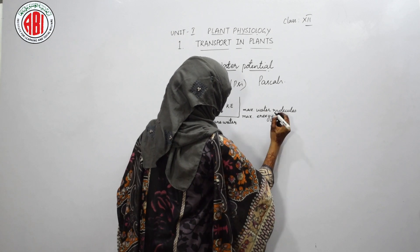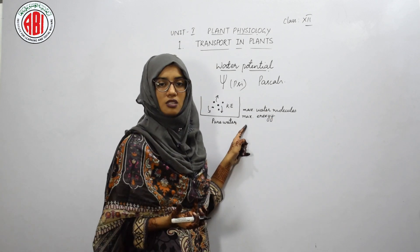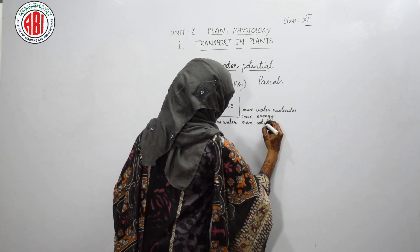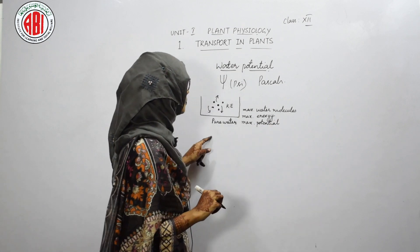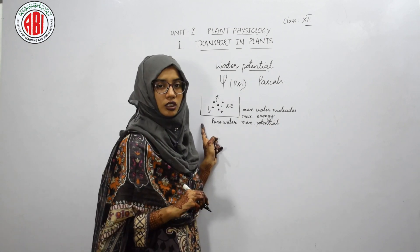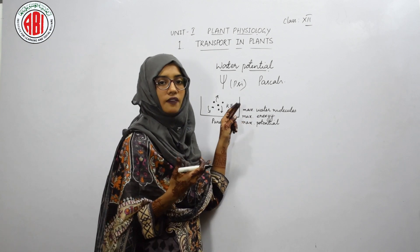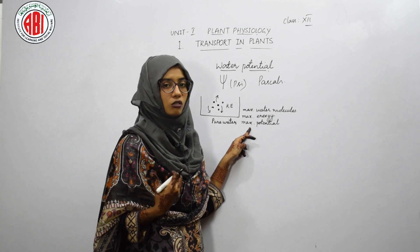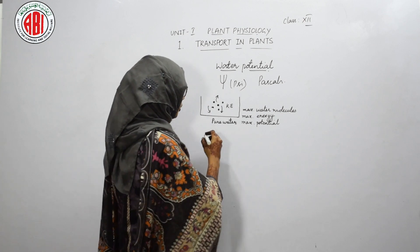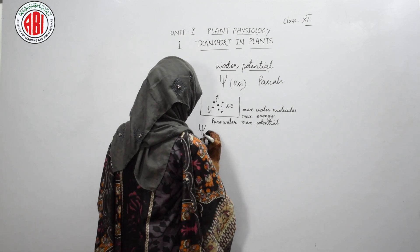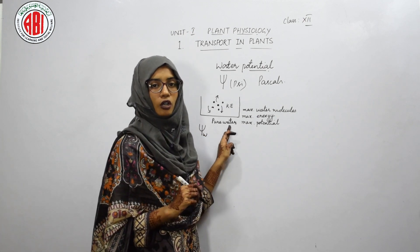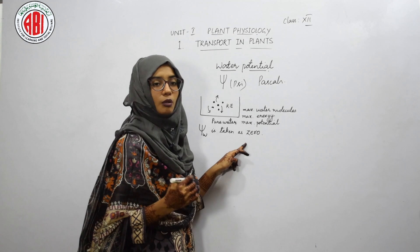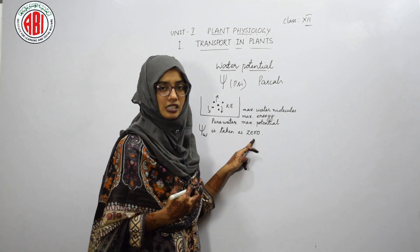Since energy is maximum in pure water, the potential to carry out work is also maximum. Water potential is represented by ψw. The water potential of pure water is maximum and is taken as 0. So the maximum water potential of pure water is taken as 0.